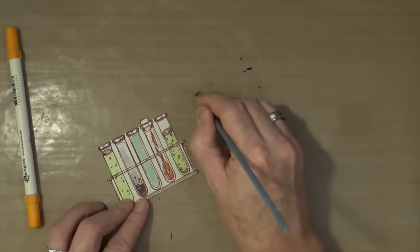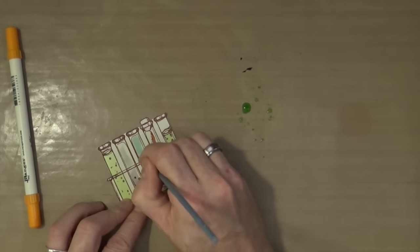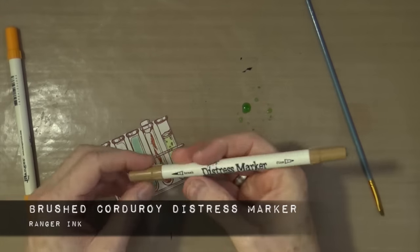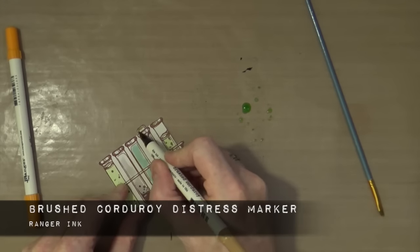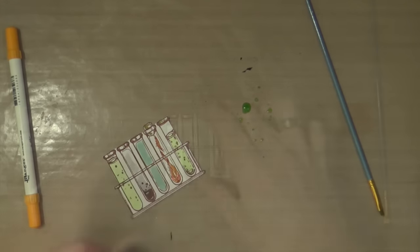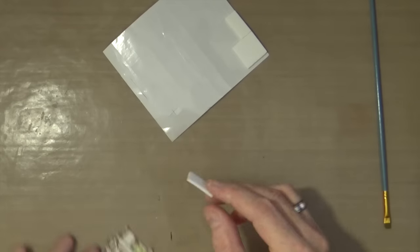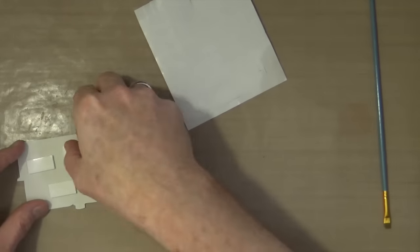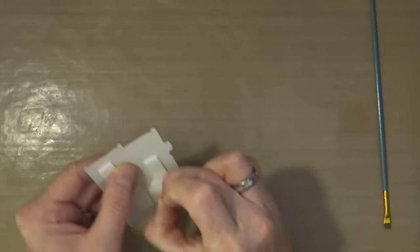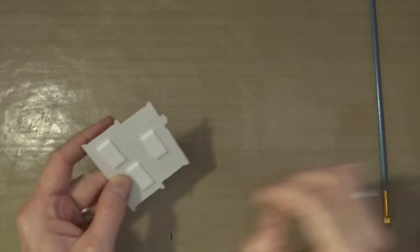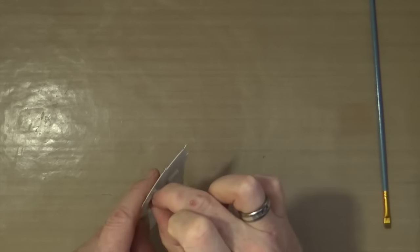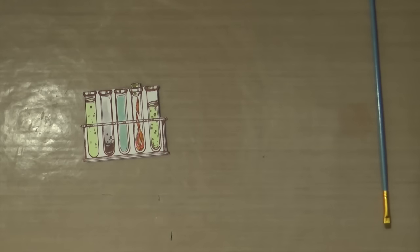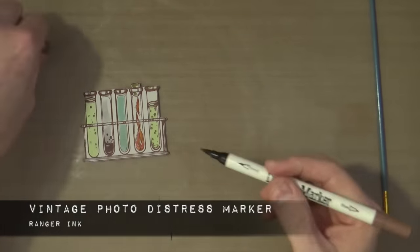To finish it off, I'm going to use the brushed corduroy distress marker just to color in those tips on the tops of the test tubes. Once again I want a little bit of dimension behind this, so I'm just going to use foam pads again. Using the vintage photo distress marker once more, I'm going to go around the outside of the cutout just to blend in those white edges before I stick it down onto my canvas.